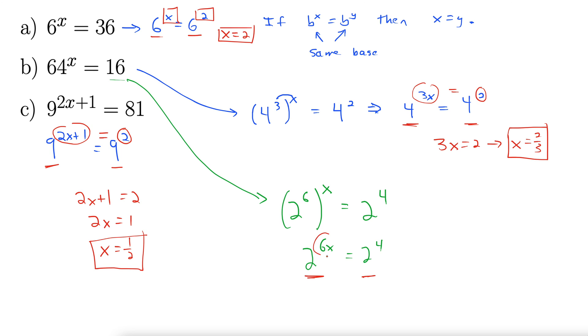And we can focus solely on the exponents. So that tells us that 6x equals 4. x equals 4 6ths. Which indeed simplifies to 2 thirds. Same answer as above. So really, there's a few different ways to do these. As long as you get the base the same, you're good to go.